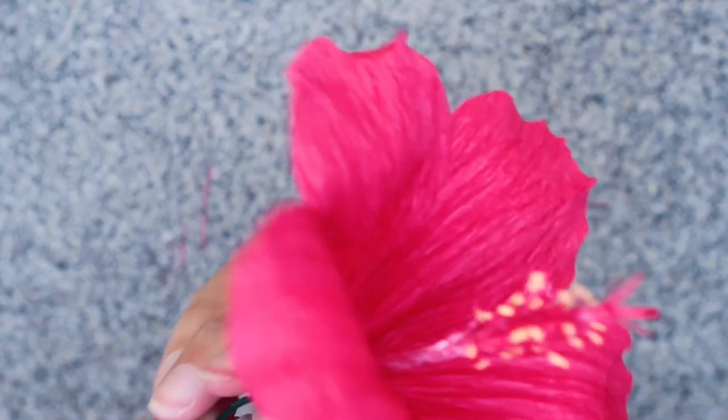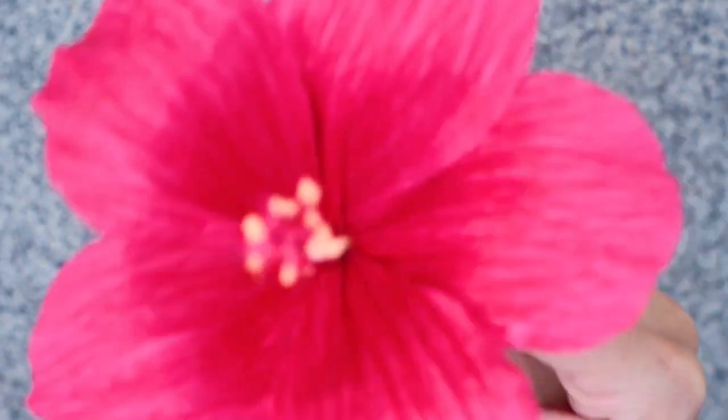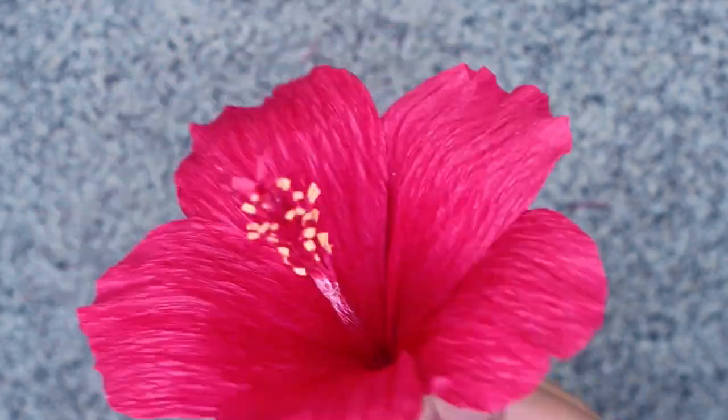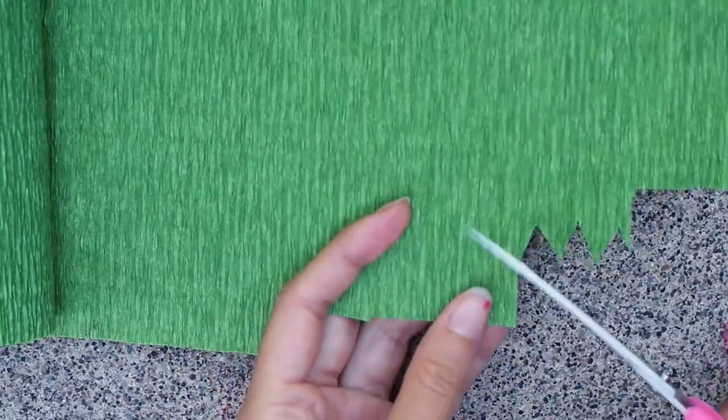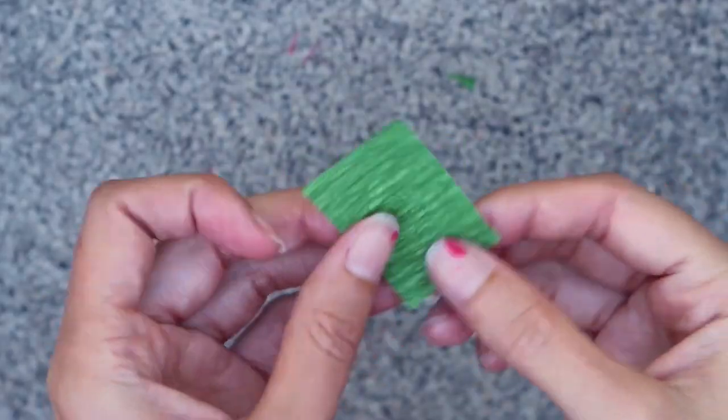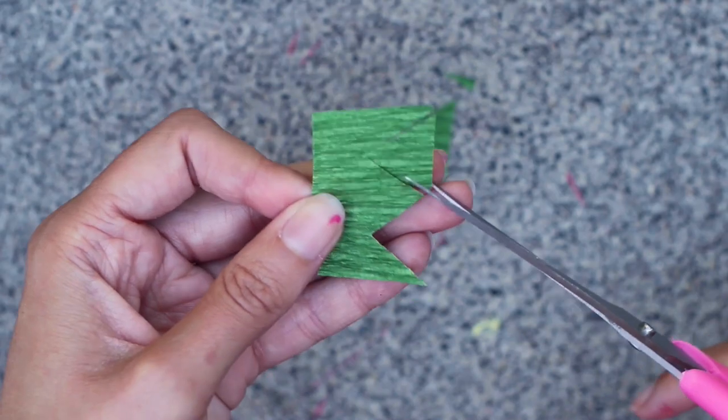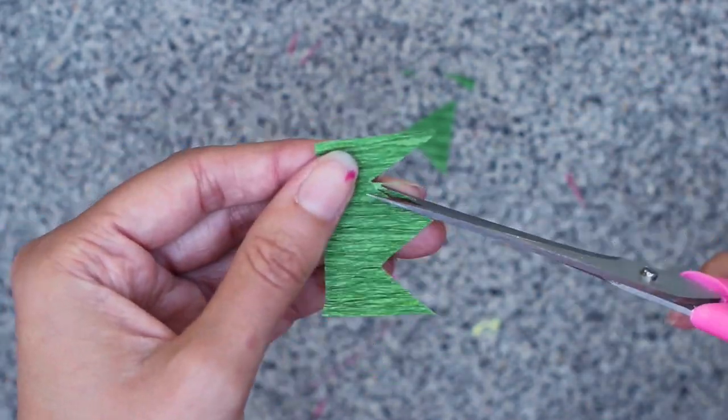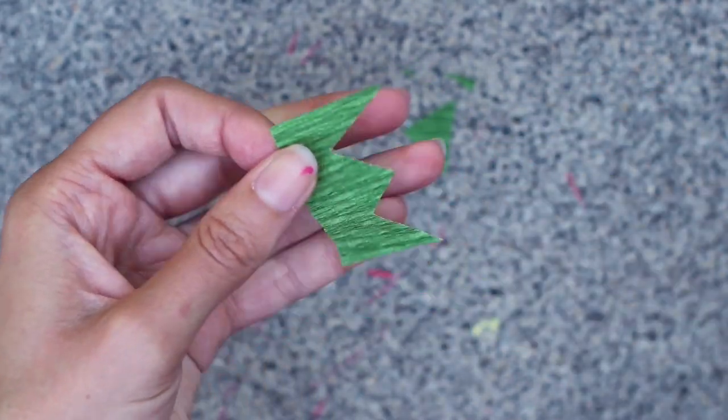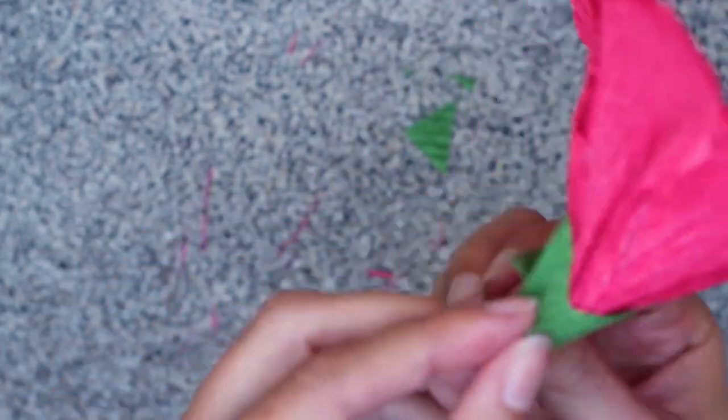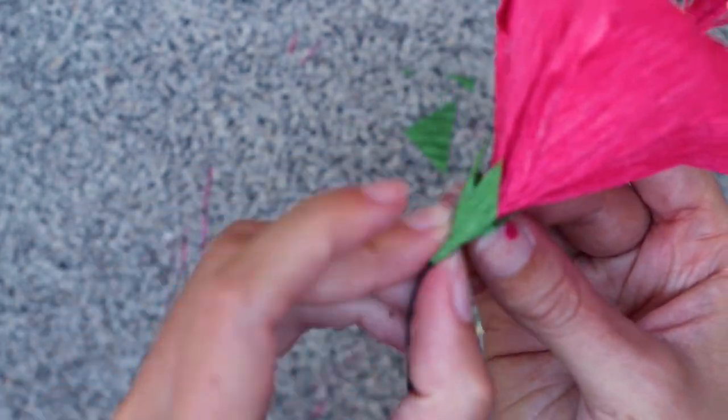Okay, so now we're going to create the calyx of the flower. I'm going to bend the flower a little bit so the wire is curved. Like this. I'm taking some green crepe paper and cutting a rectangle like this. I'm going to cut out three triangles. So it looks like this.